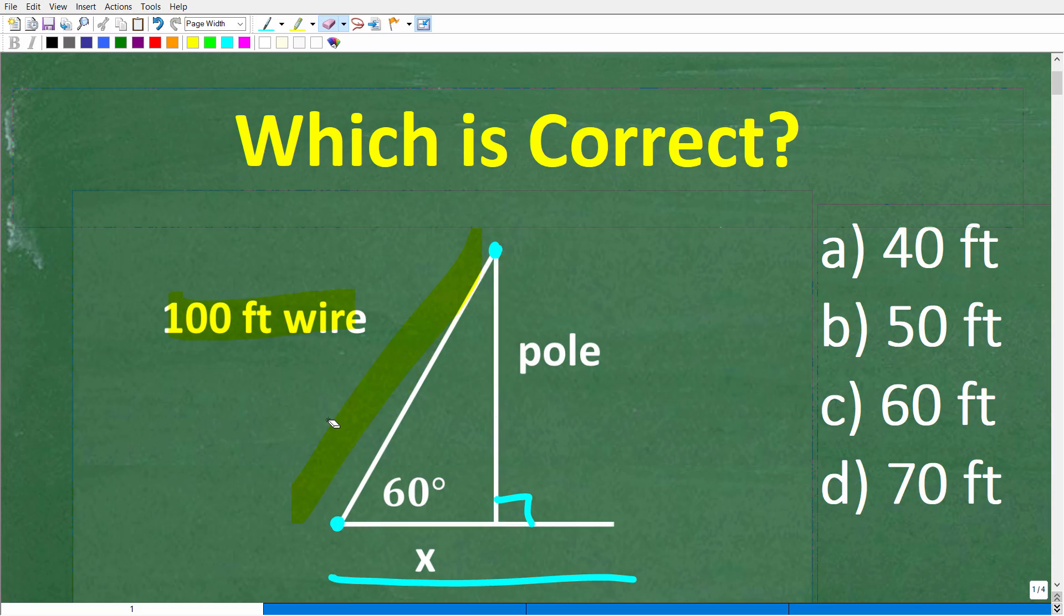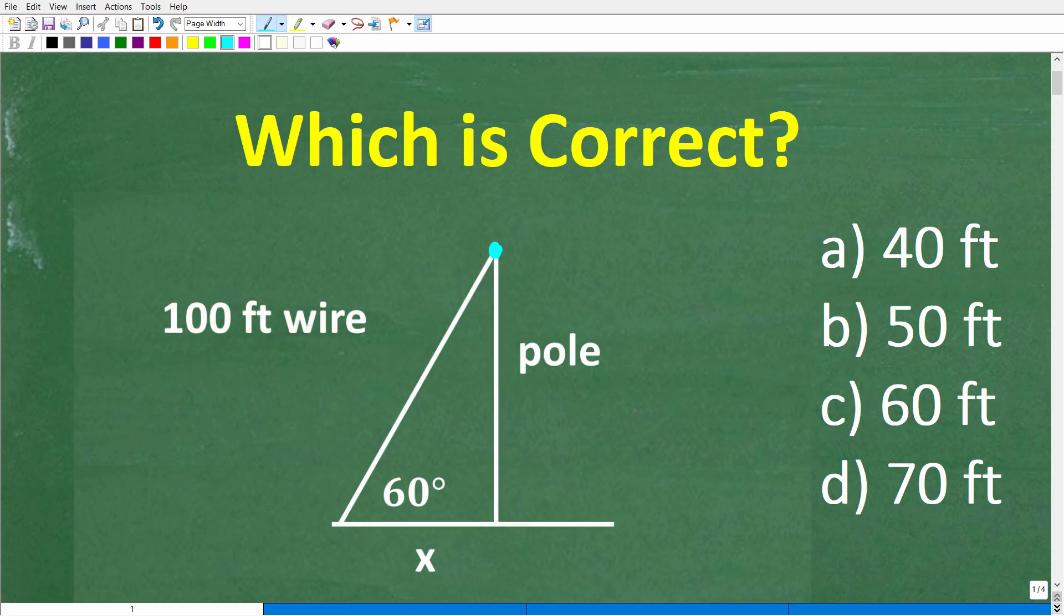Now, the angle formed from the wire to the ground is 60 degrees. Alright, so I'm basically just kind of giving you interpretation of the problem, but the question is, what is this length right here, which is the smallest leg of this little triangle? So, a is 40 feet, b is 50 feet, c is 60 feet, or d, 70 feet.